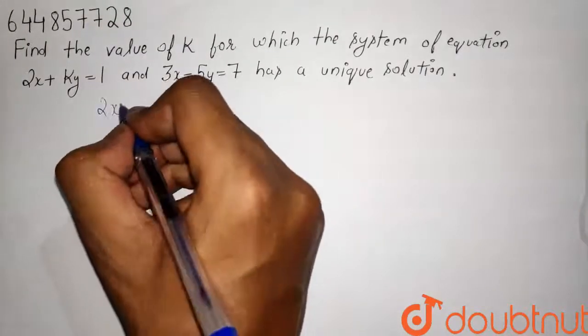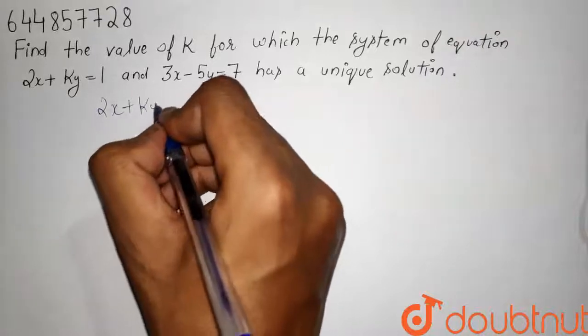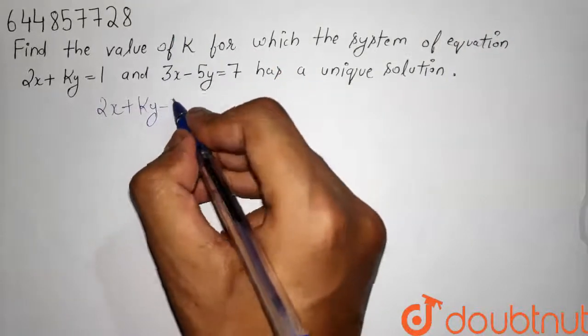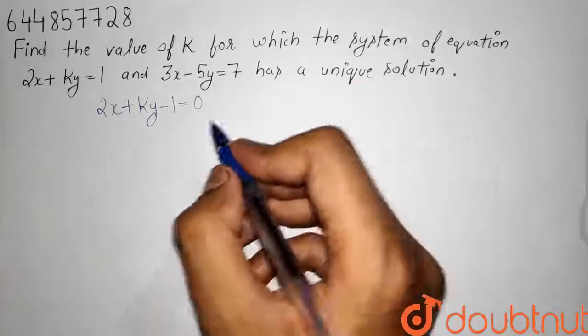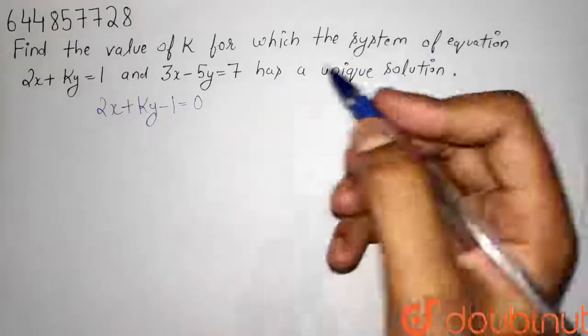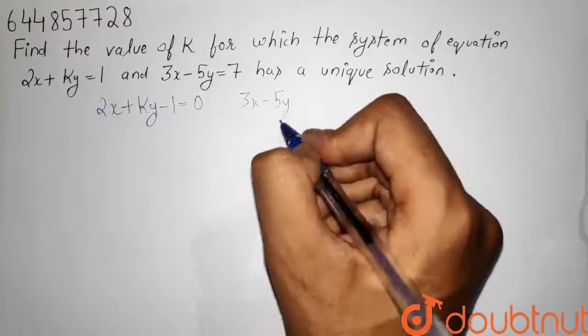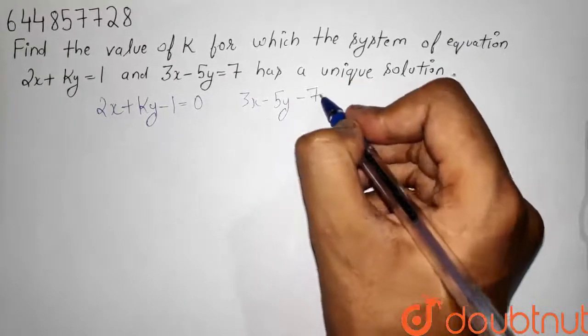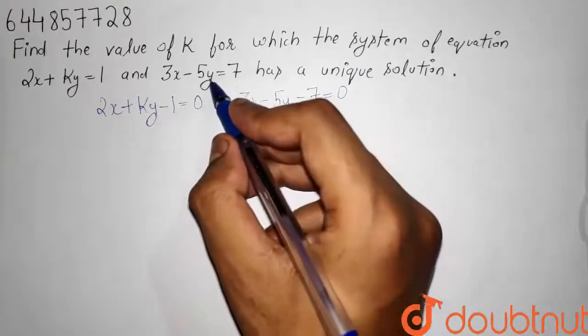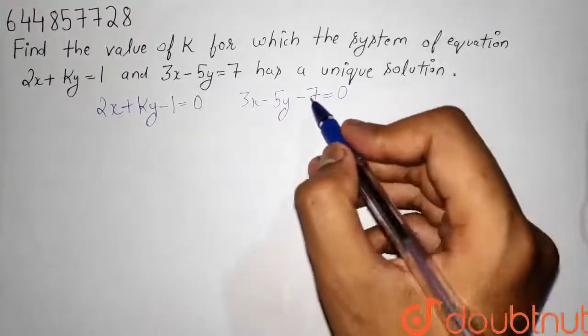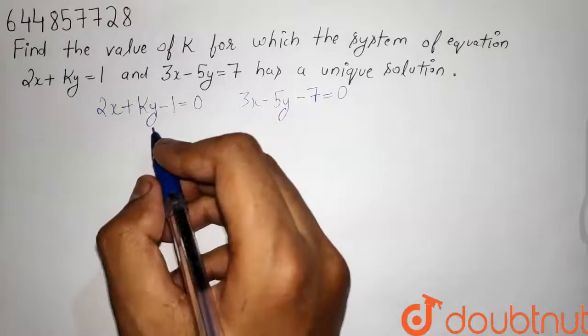The given equations are 2x + ky, taking 1 to this side, so it will be minus 1 equals 0. And the second equation will be 3x - 5y - 7 = 0. We have taken 7 to this side, so plus 7 becomes minus 7.